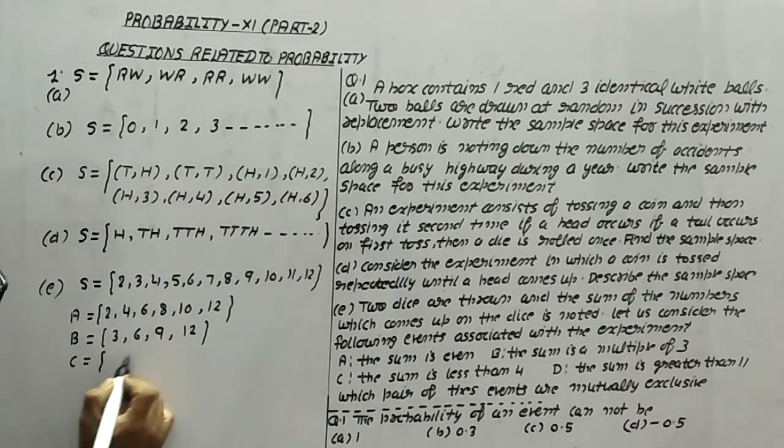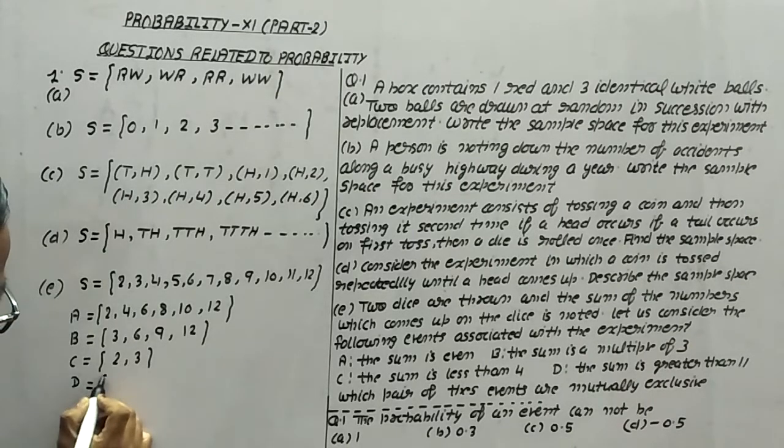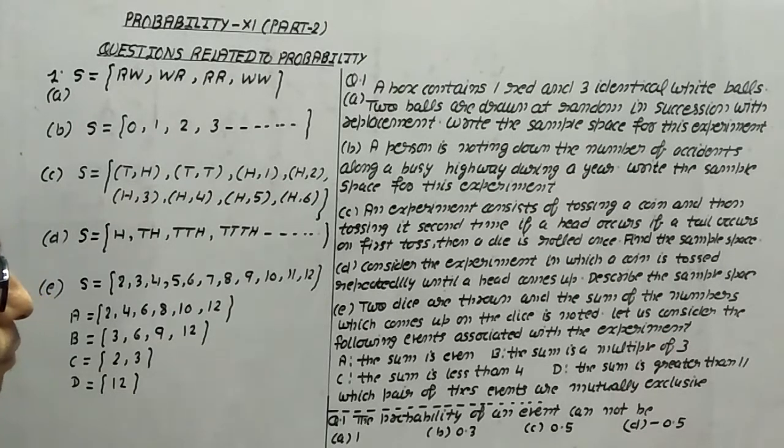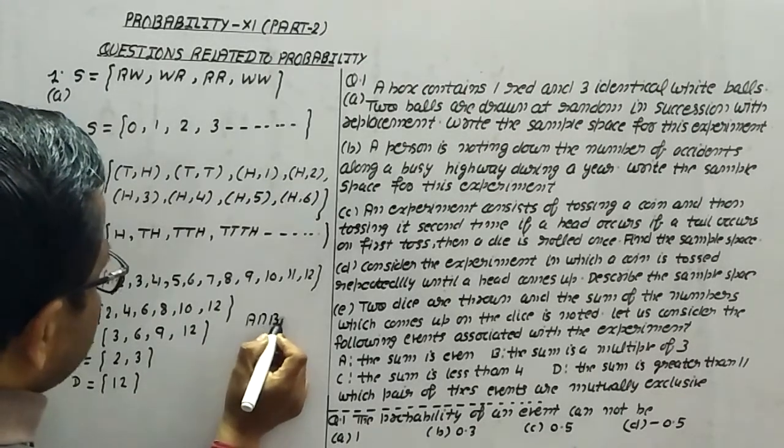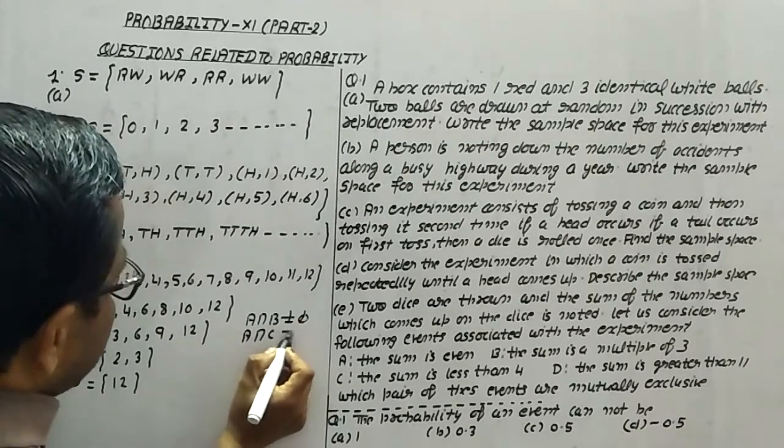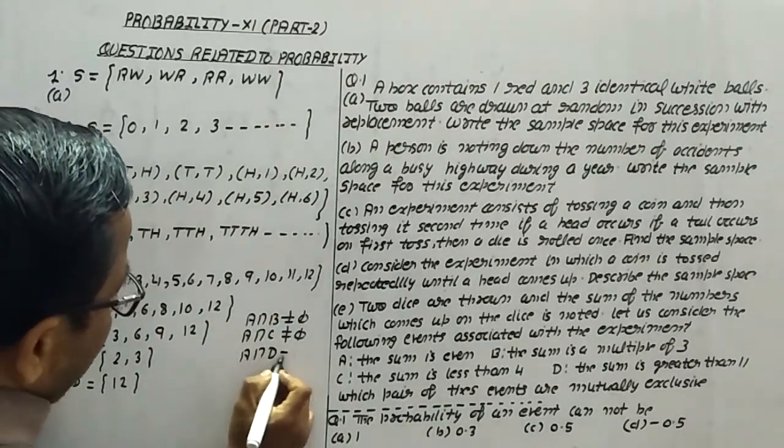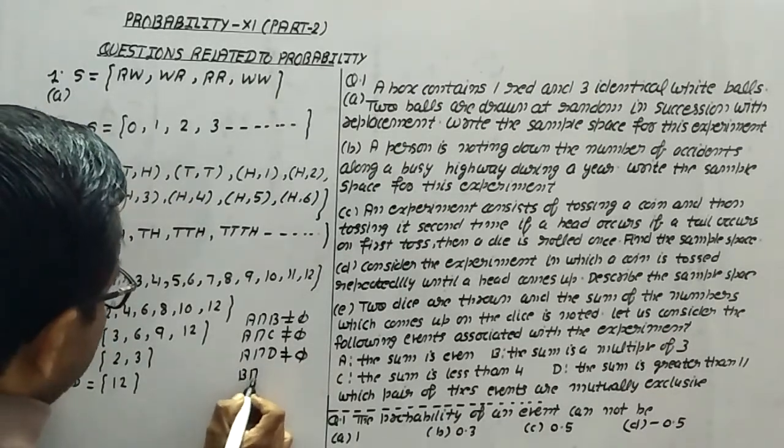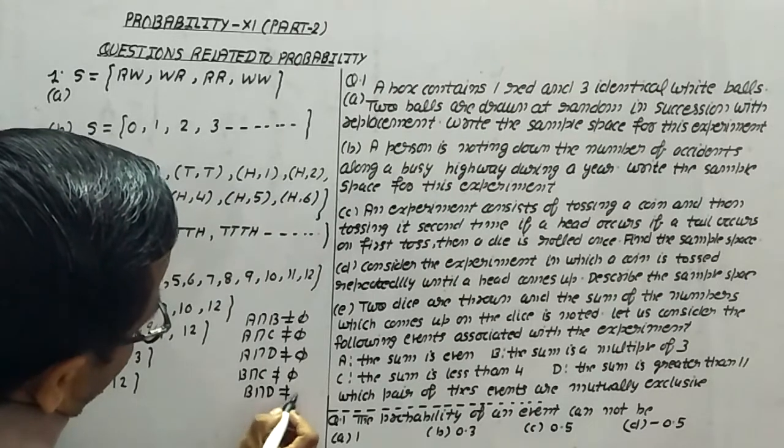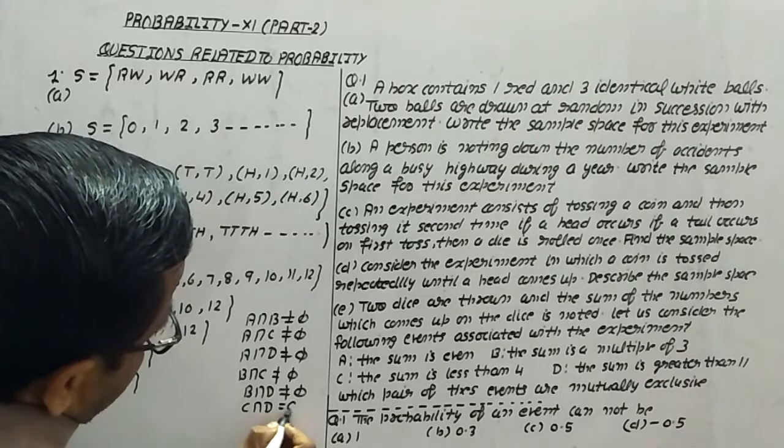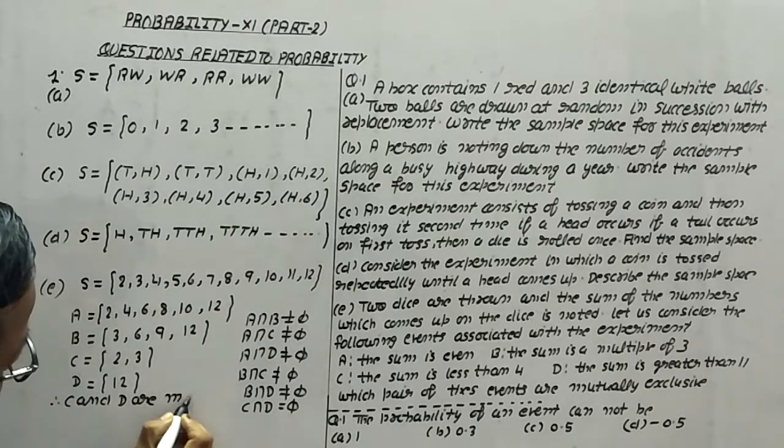C is the event the sum is less than 4, meaning C = {2, 3}. D is the event that the sum is greater than 11, meaning D = {12}. We have to check which pairs are mutually exclusive. A∩B ≠ φ, A∩C ≠ φ, A∩D ≠ φ, B∩C ≠ φ, B∩D ≠ φ, but C∩D = φ. Therefore, C and D are mutually exclusive events.